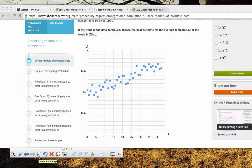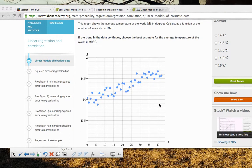So let me scroll up so we can read the situation here. This graph shows the average temperature of the world in degrees Celsius as a function of the number of years since 1970. And so the first thing I'm going to do is I'm going to place a line of best fit. It appears that it kind of goes right there. It's in a good position. It's in the middle of the data. It seems like it's at the right angle for the data, so I'm going to be okay with it.